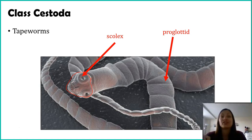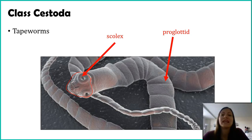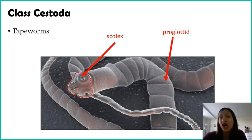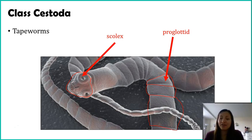The scolex is the attachment point onto the small intestine. The rest of the tapeworm's body is free-floating in your intestines — it is just the scolex that attaches to the intestinal wall. Everything else is just hanging out in your intestines, which are tens and tens of feet long, and tapeworms can get that long too. The rest of the tapeworm is made up of segments called proglottids — every single one of these segments is a proglottid, and what's inside them? Eggs.